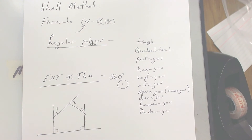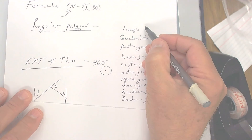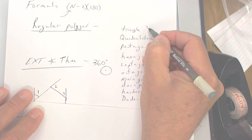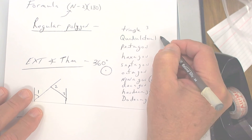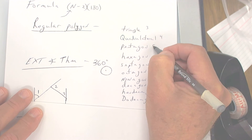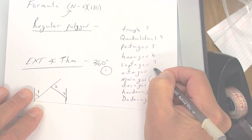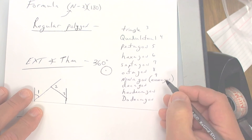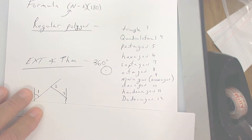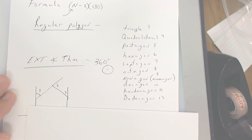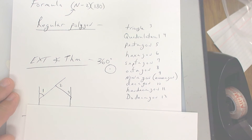Let's go over polygon names. A triangle is 3 sides. If you say rectangle, you're going to miss it — it's called a quadrilateral, that's 4 sides. Pentagon is 5, hexagon is 6, septagon is 7, octagon is 8, nonagon is 9, decagon is 10, hendecagon is 11, and dodecagon is 12. That's all we're going to concern ourselves with — if you want to look up others, go ahead.